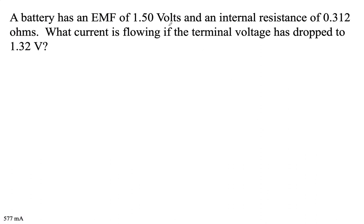A battery has an EMF of 1.5 volts and an internal resistance of 0.312 ohms. What current is flowing if the terminal voltage has dropped to 1.32 volts?